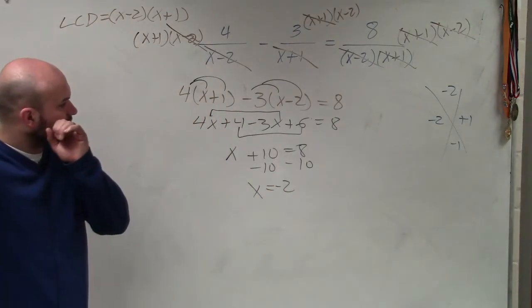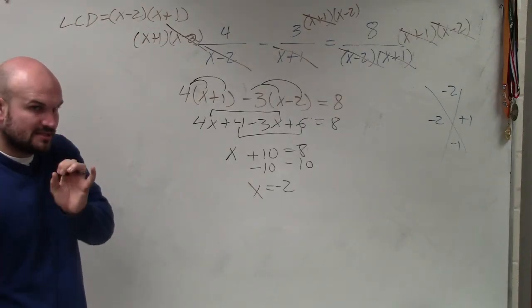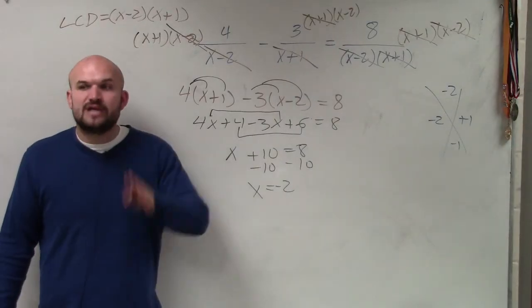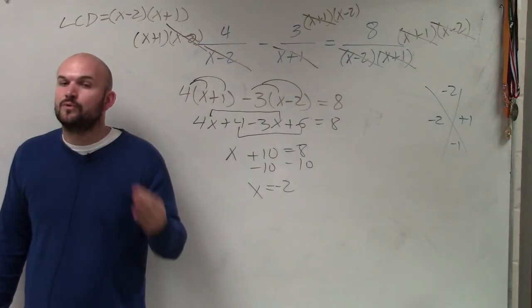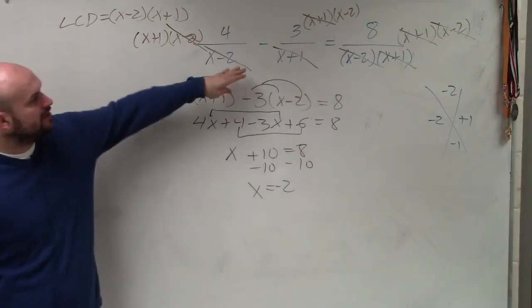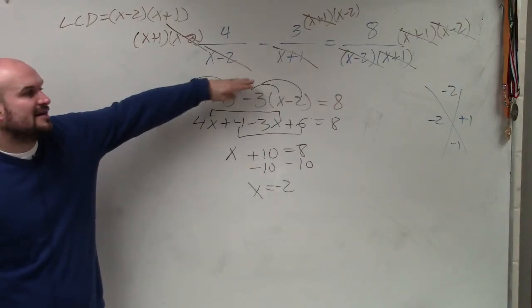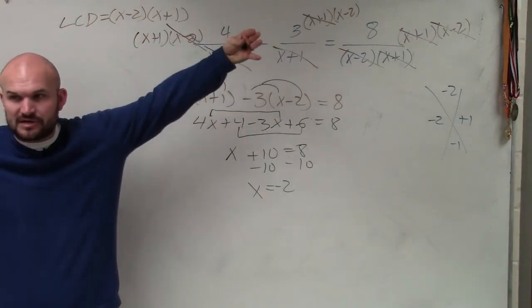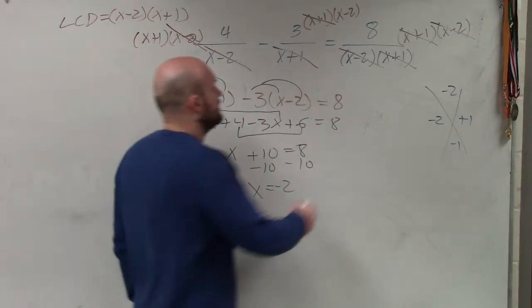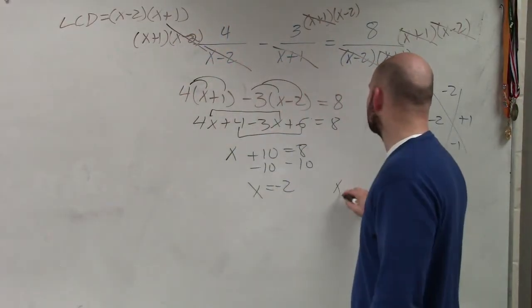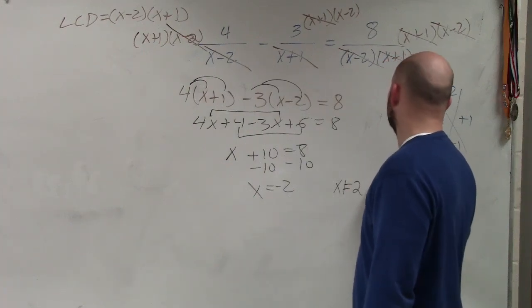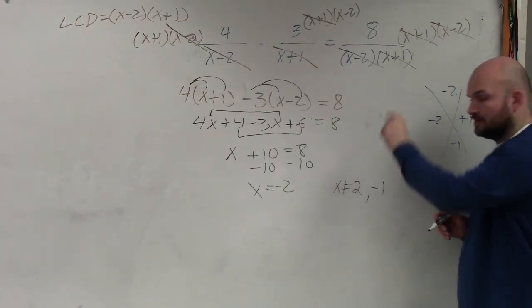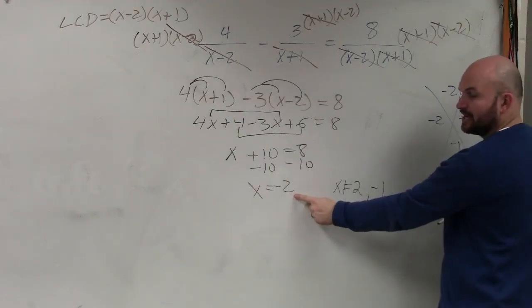It's very important that once you guys get your answer for an equation, that we go back and we check our answer to make sure that it works. Because when we look up here, we want to look at what the problem cannot be. Remember we did all these constraints? So in this example, we know that x cannot equal positive 2 and negative 1, because those would make the denominator 0. So is my answer 2 or negative 1? No.